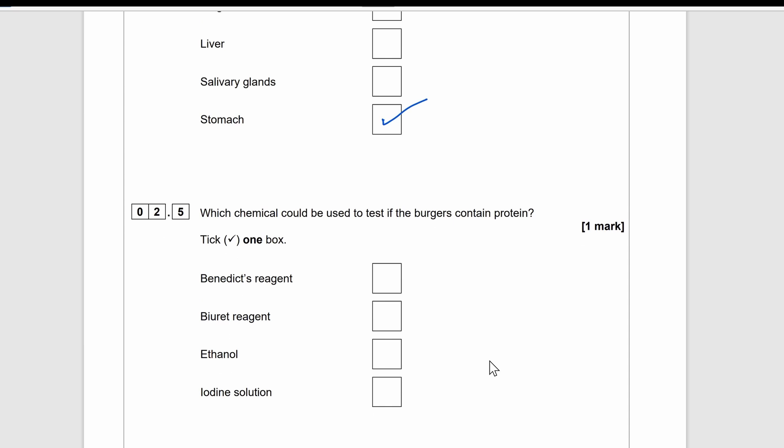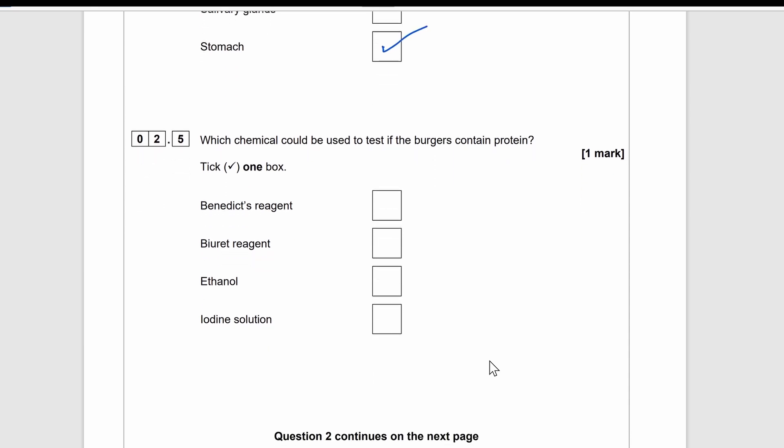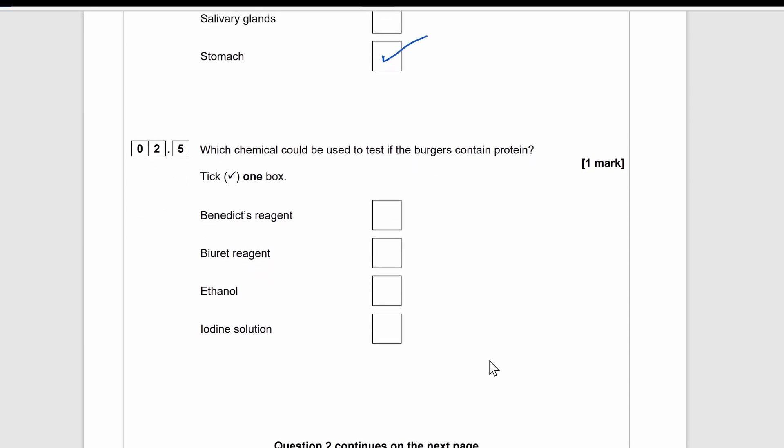One of the practicals that might come up would be on food tests from B2 organization. What it will require you to do is to describe the different chemicals that you may need to test for different foods and state the color changes that they would turn if that food type is present. Watch the following clips to remind you of the different chemicals and the different color changes that appear for the different foods.